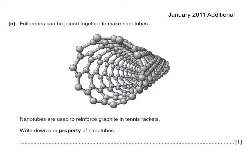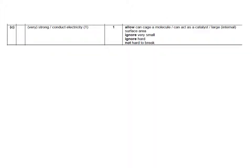Here's a past paper question on this topic. Fullerenes can be joined together to make nanotubes. Nanotubes are used to reinforce graphite in tennis rackets. Write down one property of nanotubes. We may as well write one down which is related to their use in tennis rackets, which is that they are very strong. But we could also have written down they conduct electricity. Those are the two acceptable answers from the specification. You're also allowed to say that it can act as a catalyst, and they even allow that it can cage a molecule, even though that's not on the specification at all.